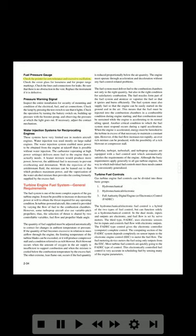Fuel pressure gauge: Check the pointer for zero tolerance and excessive oscillation. Check the cover glass for looseness and for proper range markings. Check the lines and connections for leaks. Be sure there is no obstruction in the vent. Replace the instrument if it is defective. Pressure warning signal: Inspect the entire installation for security of mounting and condition of the electrical, fuel, and air connections. Check the lamp by pressing the test switch to see that it lights. Check the operation by turning the battery switch on, building up pressure with the booster pump, and observing the pressure at which the light goes out. If necessary, adjust the contact mechanism.